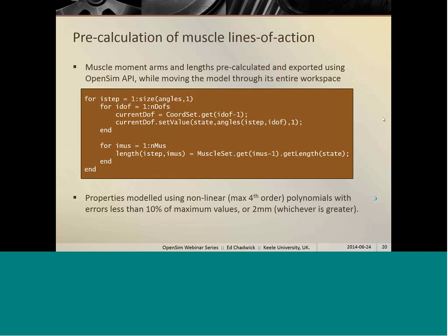Once we've got expressions or data on all those muscle lengths throughout the entire workspace, we can model those using polynomials, and then that polynomial evaluation during runtime is much faster than calculating the wrapping. And we do that with a maximum error of 10% of the maximum moment arm value or length value or 2 millimeters, whichever is greater.